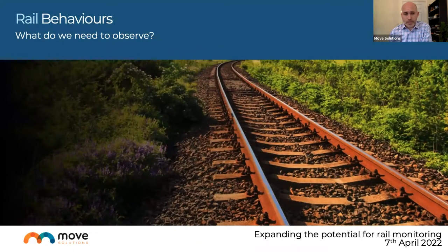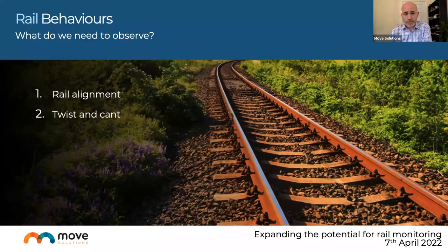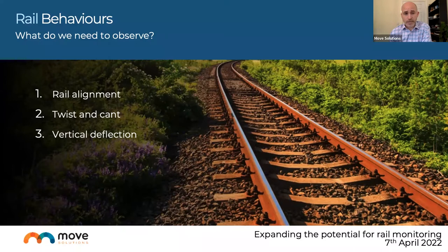Rail behaviors we want to observe include: rail alignment — are the tracks maintaining alignment over time? Twist and cant — are we seeing deformation from the original installation? Vertical deflection — an increase in incline or decline over a longer or shorter rail length? And lateral slew — lateral movement of the sleepers and track, which is of significant concern during hotter weather. There have recently been communications with Network Rail specifically around observing temperature increases and their implications for lateral slew.